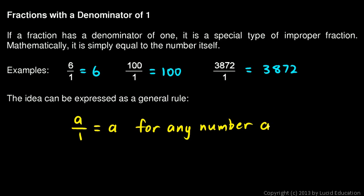So instead of a few specific examples, any possible example is expressed with this general idea here. a over 1 is always equal to a.